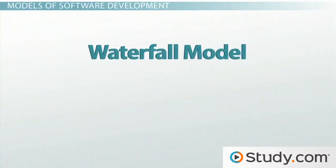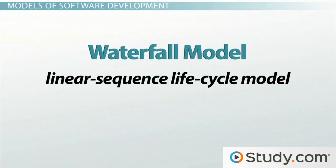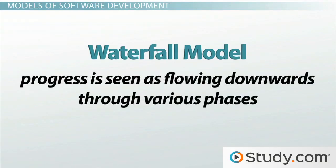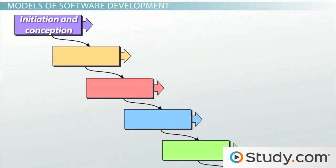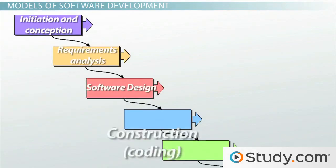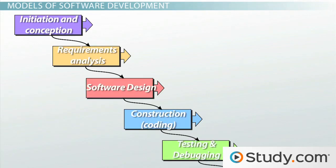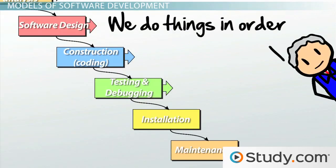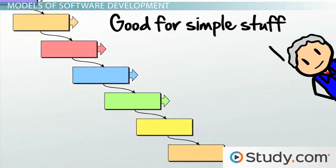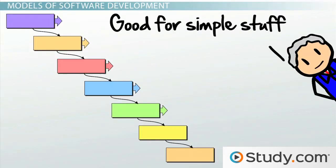The waterfall model of software development follows a very sequential design process. It is also referred to as a linear sequence lifecycle model. In this model, progress is seen as flowing downwards through various phases like a waterfall. The phases include initiation and conception, requirements analysis, software design, construction or coding, testing and debugging, and installation and maintenance. The basic premise of the waterfall model is that you only move to the next phase when the preceding phase is completed successfully. This approach works well for projects that are relatively simple.